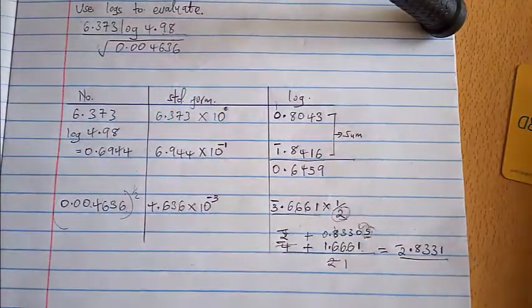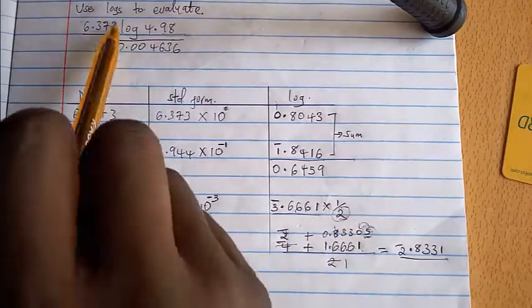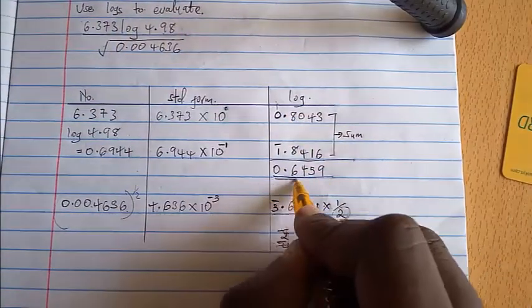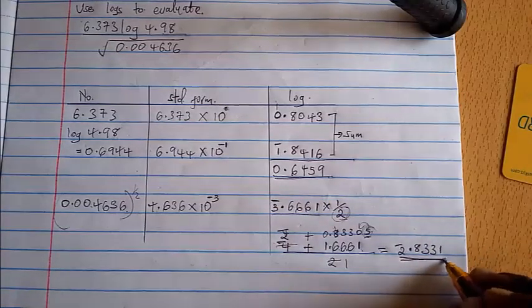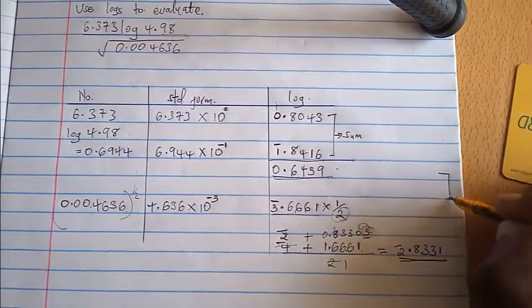Now that is therefore the logarithm of the square root of 0.004636. From there remember this was the numerator and the numerator when we worked it out we got this, and the denominator is this, so we'll need to find the difference between these two, so we need to subtract.